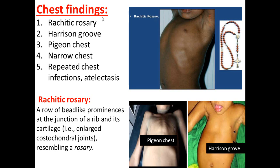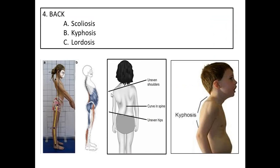In the chest, there is rickety rosary — a row of bead-like prominences at the junction of the ribs and their cartilage, meaning enlarged costochondral junctions. There is pigeon chest, narrow chest, and Harrison's groove. There are also repeated chest infections and collapse or atelectasis. In the back, there is scoliosis — a lateral curve of the spine — as well as kyphosis and lordosis. These are common late manifestations.